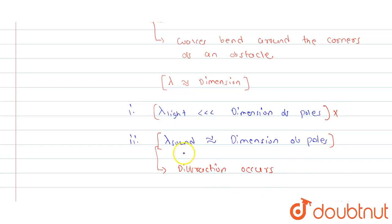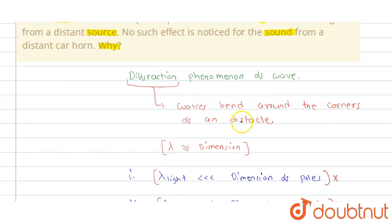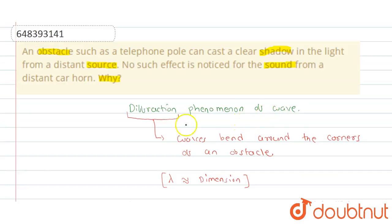So, due to the diffraction phenomenon, the sound waves bend around the corners, and we can clearly hear the sound waves coming from the car behind the pole. But in case of light, the diffraction does not occur, so it casts a shadow in front of the pole. This is the result. Thank you.